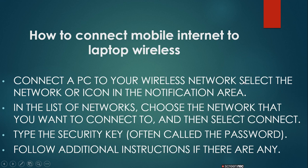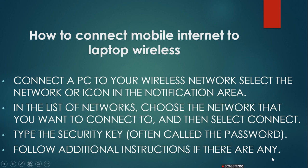For wireless connection, select the network icon in the notification area. In the list of networks, choose the network that you want to connect to, then select connect. Type the security key, often called the password, to complete the wireless connection.